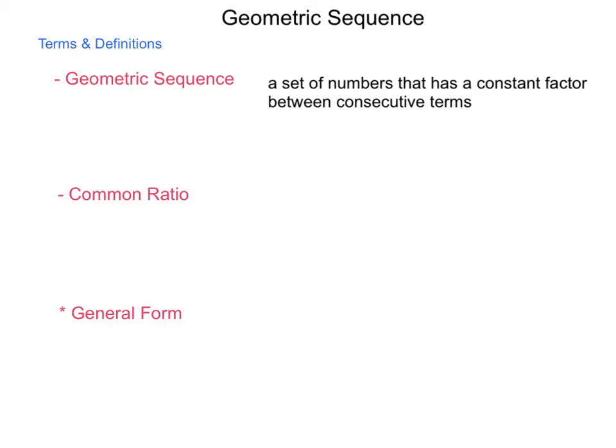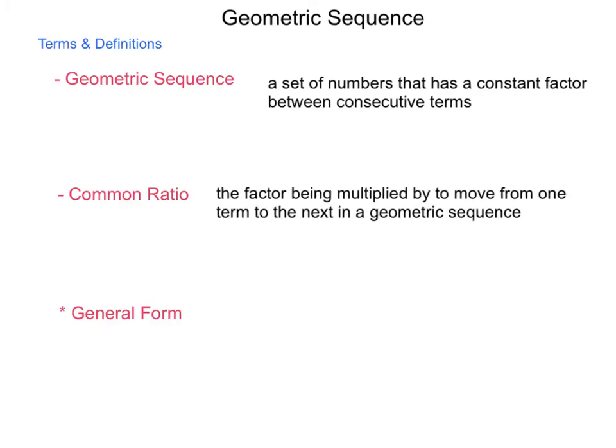Next vocabulary term is the common ratio. The factor being multiplied by to move from one term to the next in a geometric sequence. As we figure out what this multiplier is, that becomes our common ratio, and it is denoted in the mathematics with the variable r.